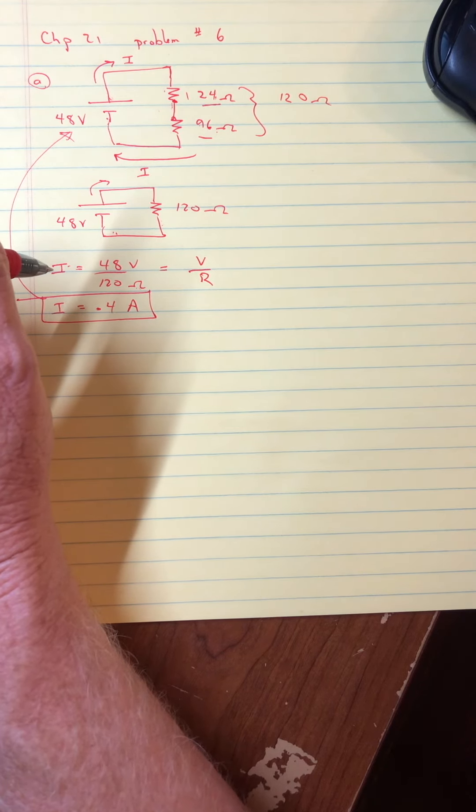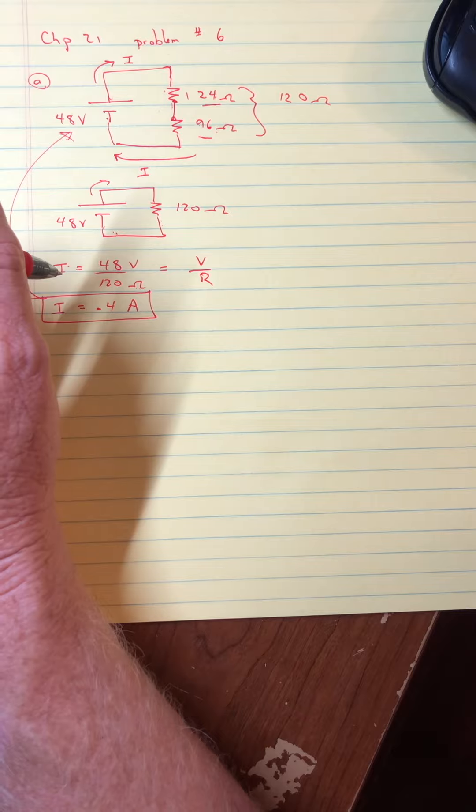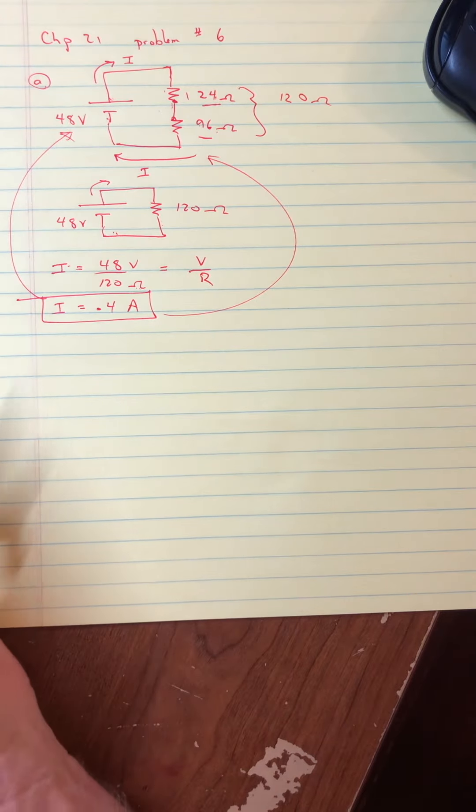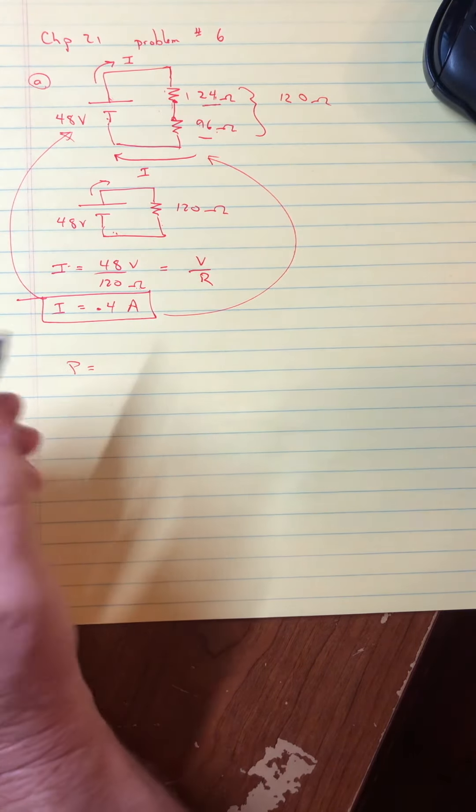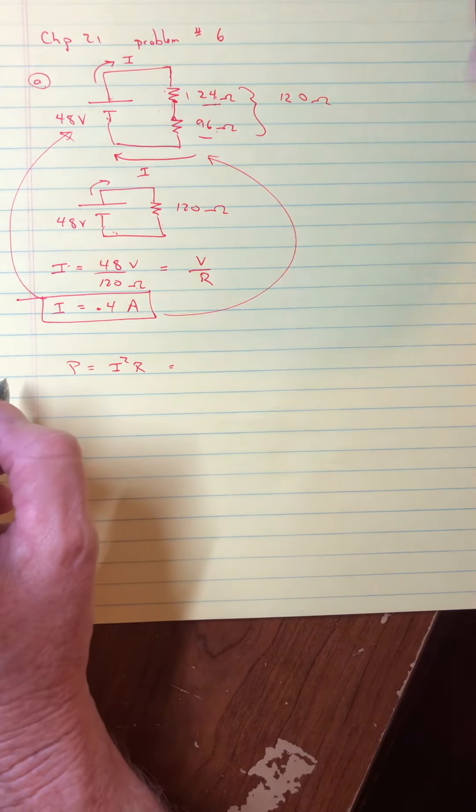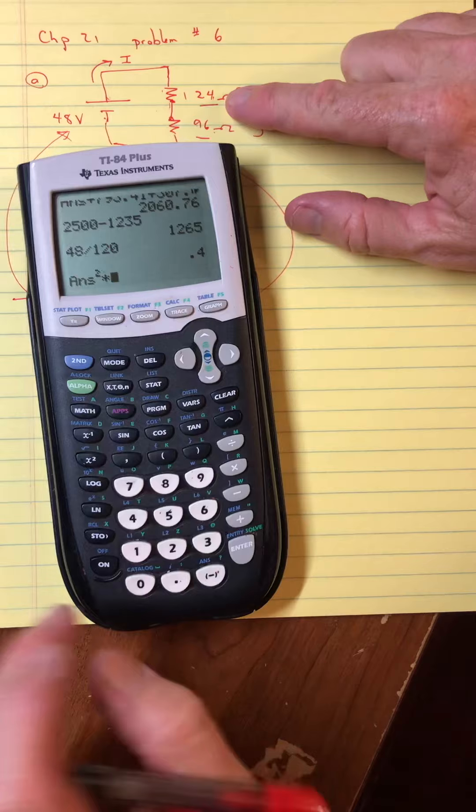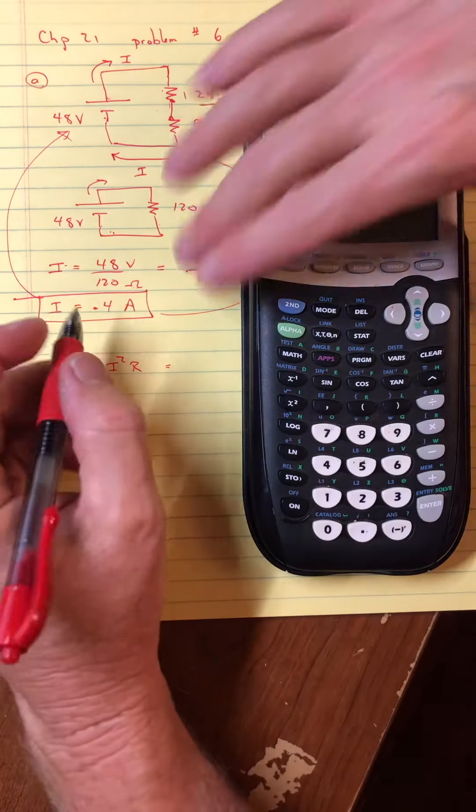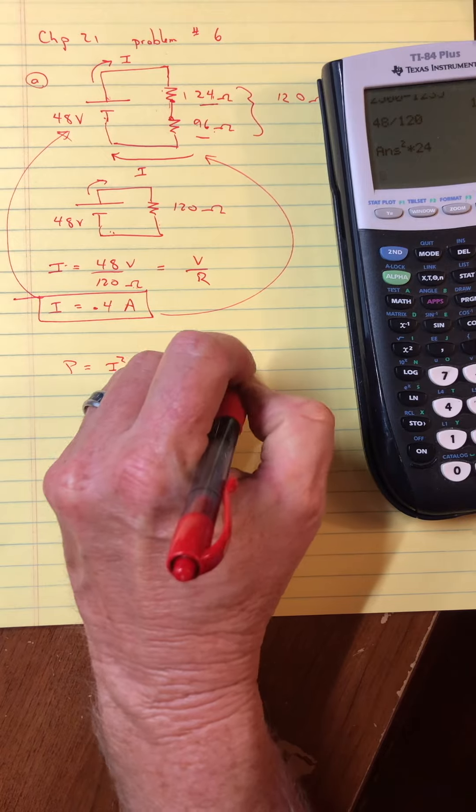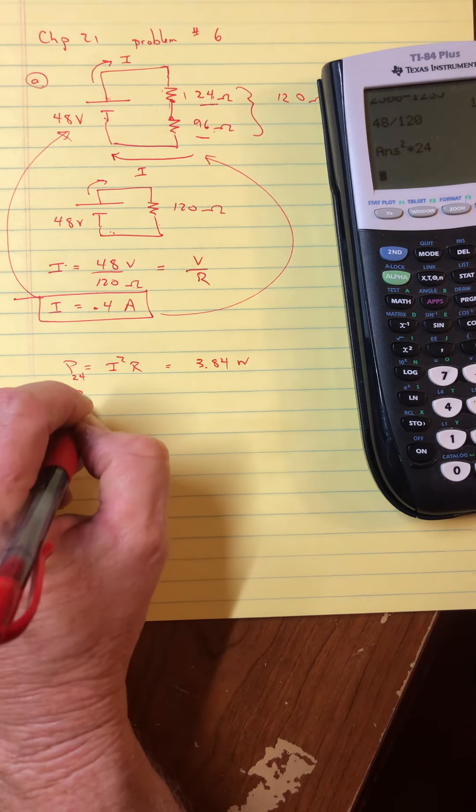And so it says, find the current and the power for each. And I think they mean each resistor when connected. So I found it in each. So there's the current. Now, the other thing would be the power. And so the power, we have a couple of options. Let me go with the I squared R option, because the I squared, and then times R, and I'll take the first one as 24, would give me 3.84 watts. And maybe I'll put a little sub 24 for saying that's the power in the 24.